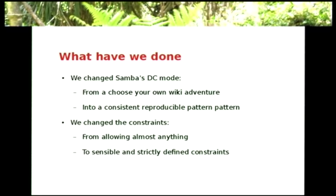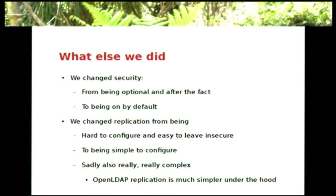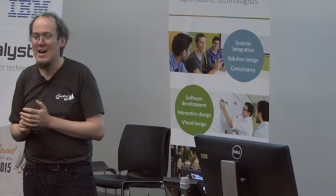We changed the constraints from allowing almost anything in the database to a sensible — you've got to use Microsoft Schema — with strictly defined constraints like you can't have the same username twice. We changed security from being optional and after the fact to being on by default. We changed replication from being hard and easy to leave insecure to being relatively simple to configure, but unfortunately the protocols underneath are fiendishly complex. I'd much rather we could use OpenLDAP's replication protocols — DRS replication is a nightmare — but if we want to interoperate with Windows, we have to do it.